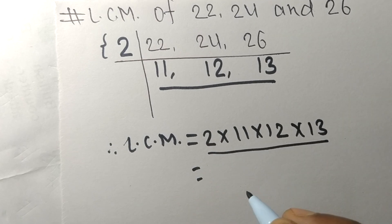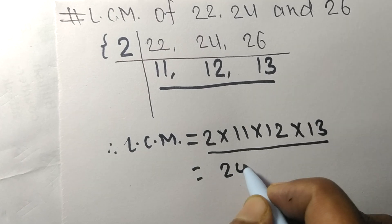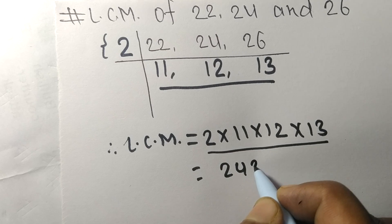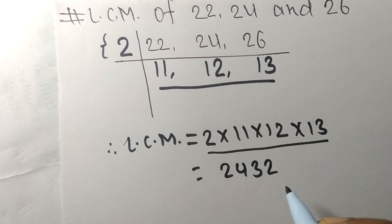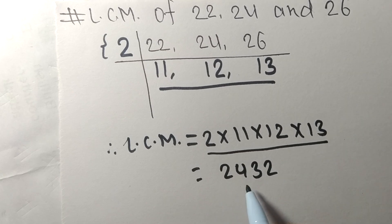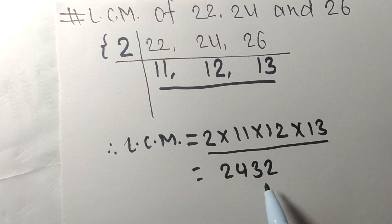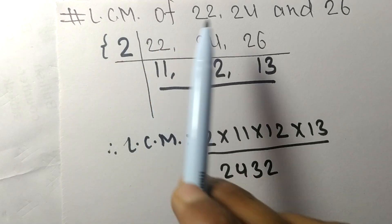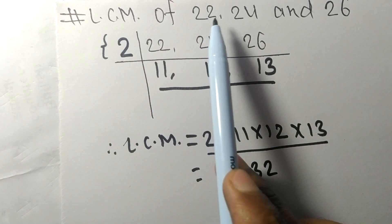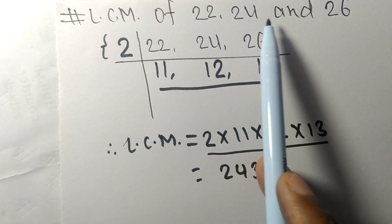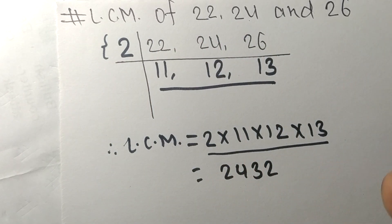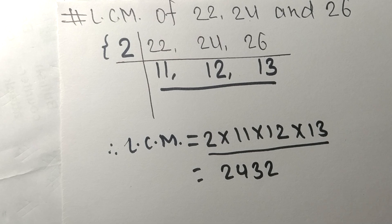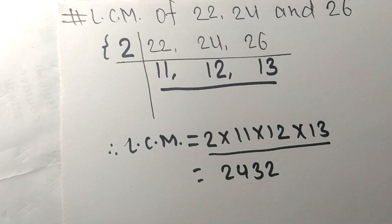By multiplying all these numbers we get 2432, so 2432 is the LCM of 22, 24, and 26. That's all for today — thanks for watching.